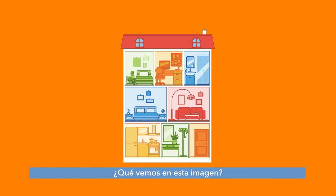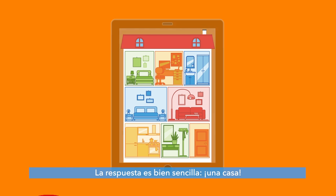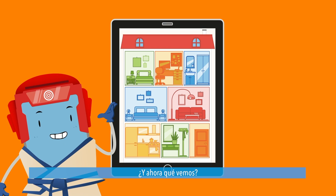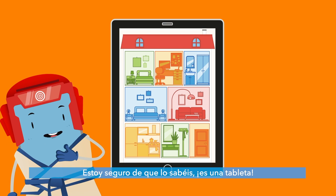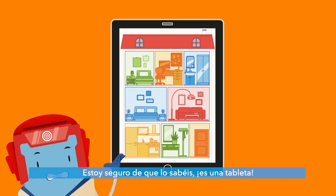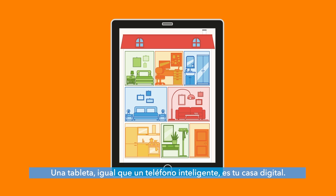What can we see in this image? Well, the answer is really simple. It's a house! What about now? I'm sure you know what it is. It's a tablet. A tablet, like a smartphone, is your digital home.